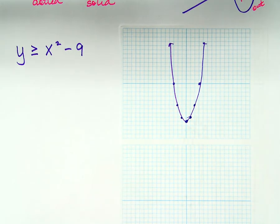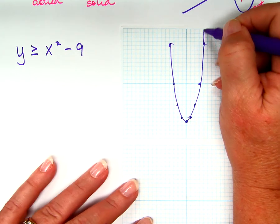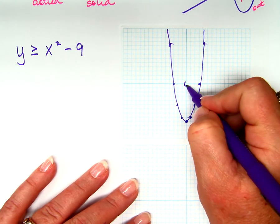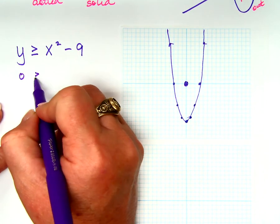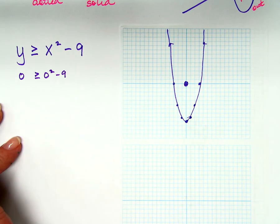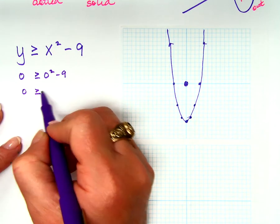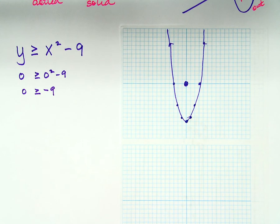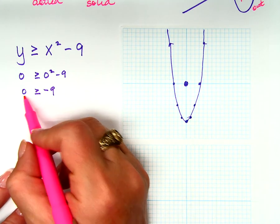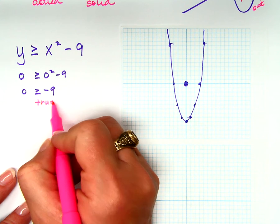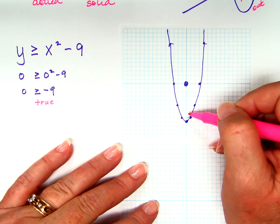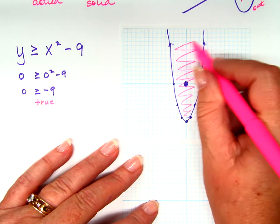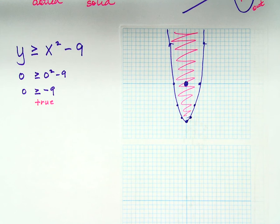How do I decide where to shade? I could choose a test point. What if I choose the point (0, 0)? 0 is greater than or equal to 0 squared minus 9, so 0 is greater than or equal to negative 9. Is that true? True. So I'm going to shade where it's true — the point I chose was inside, so I shade inside.